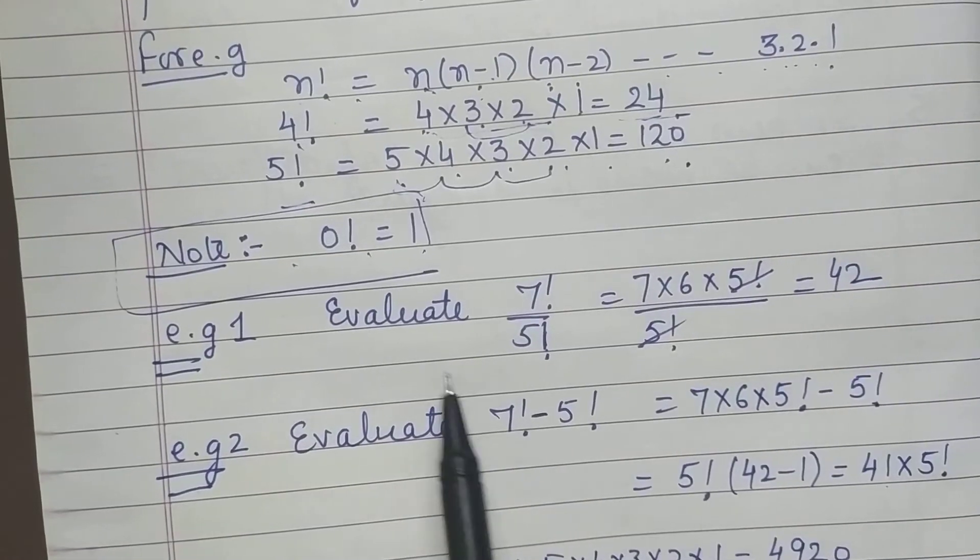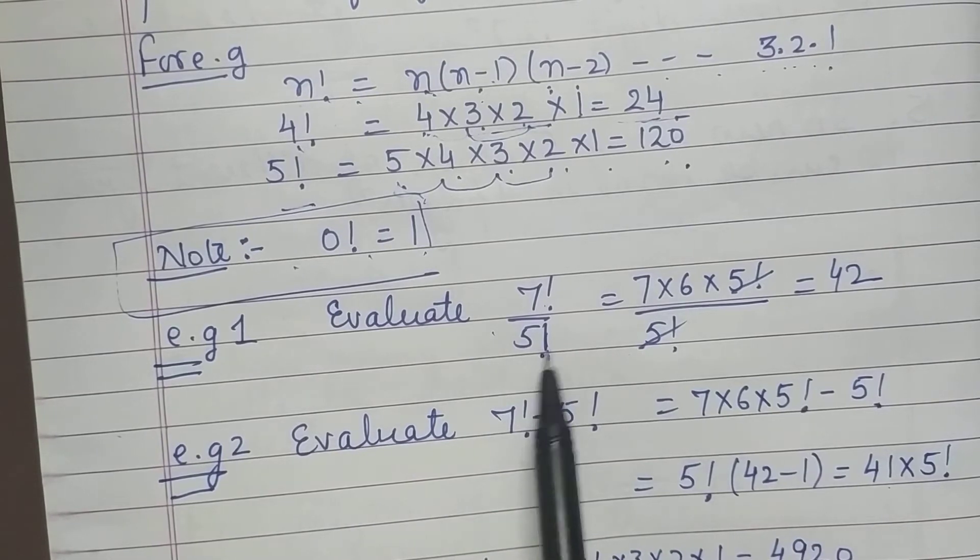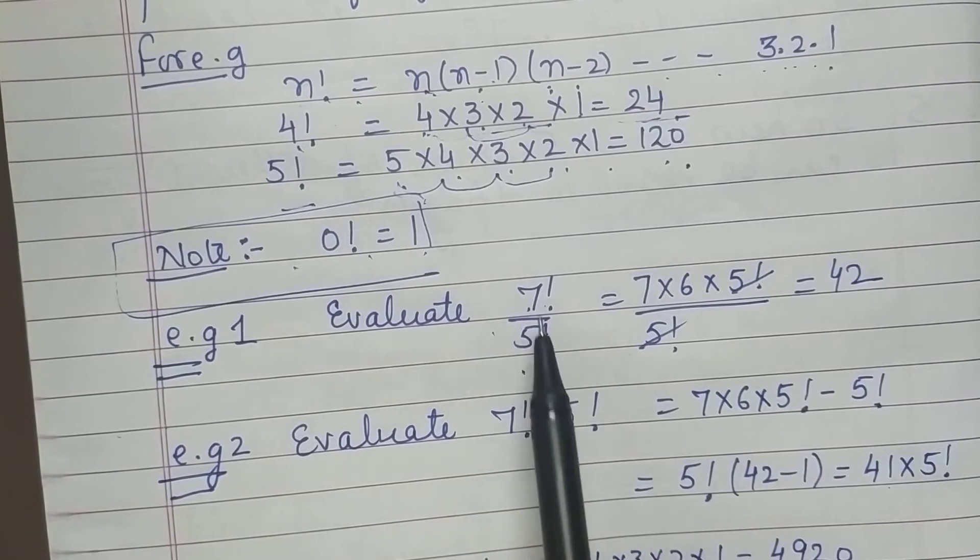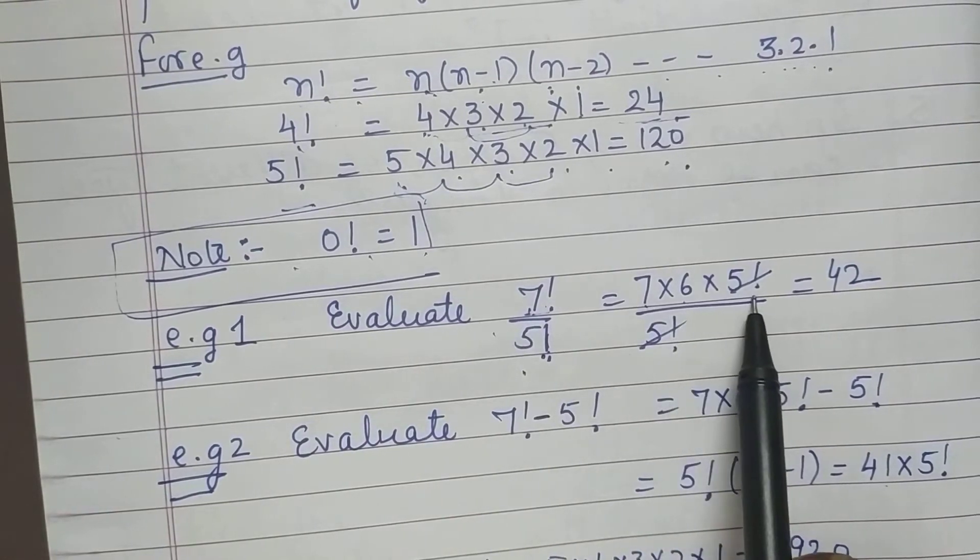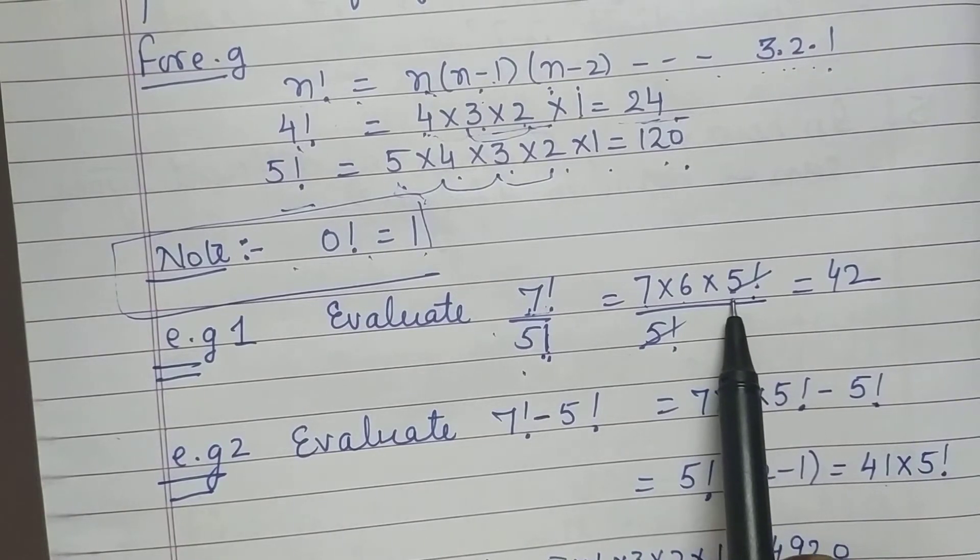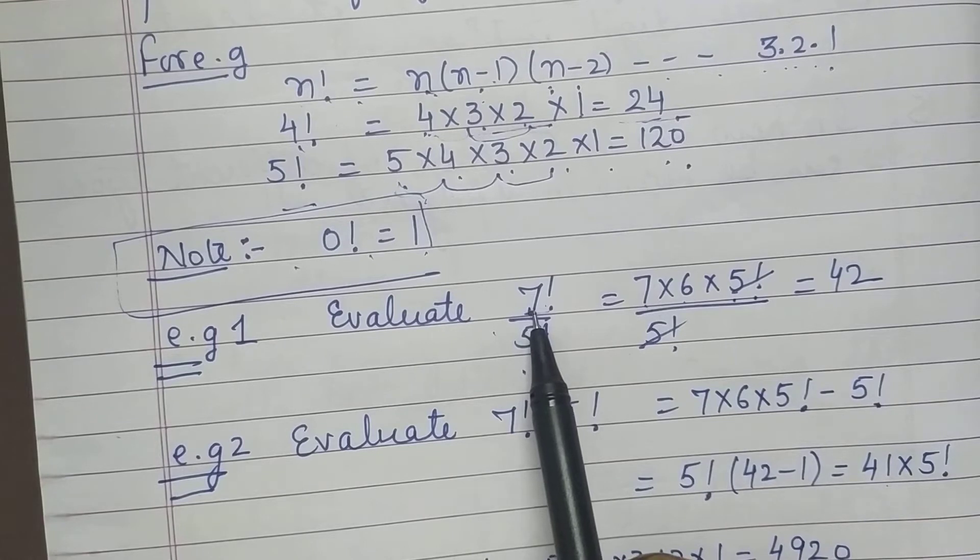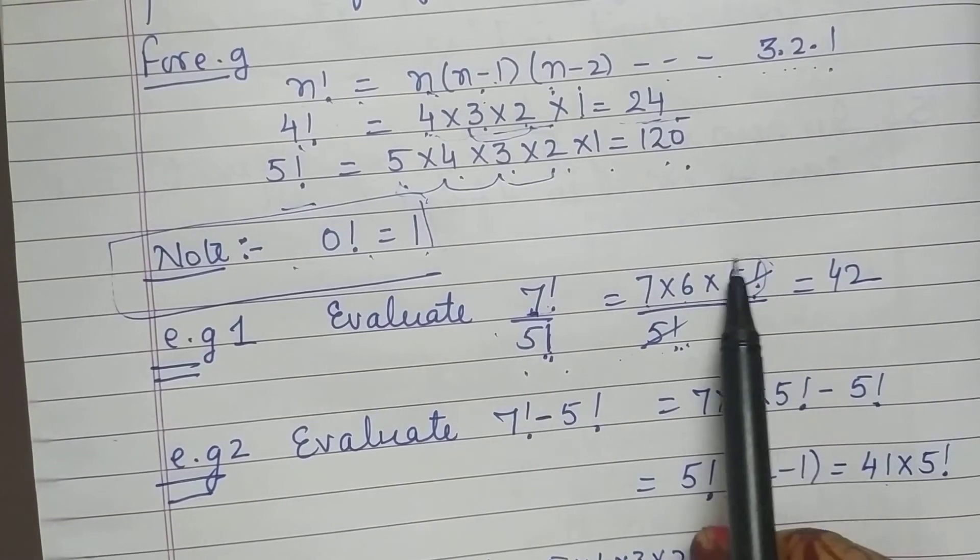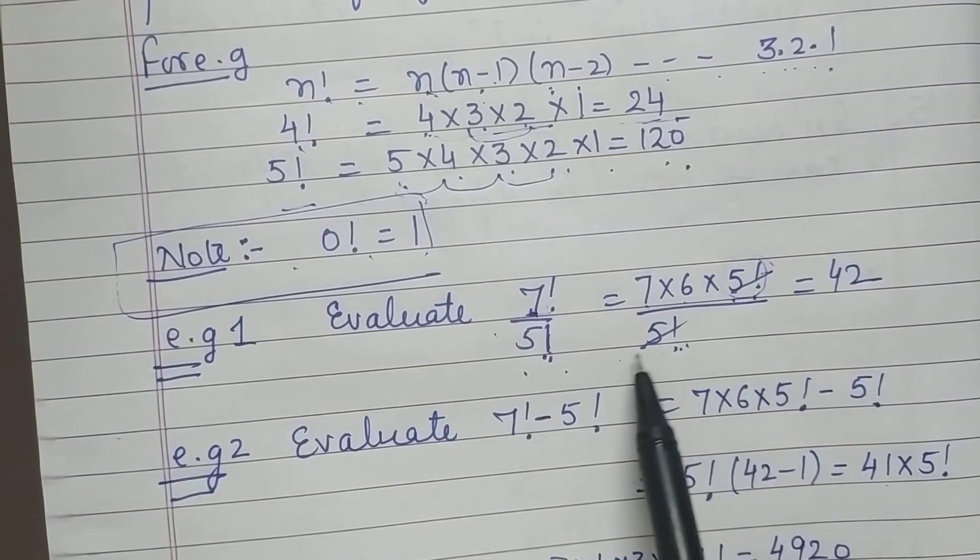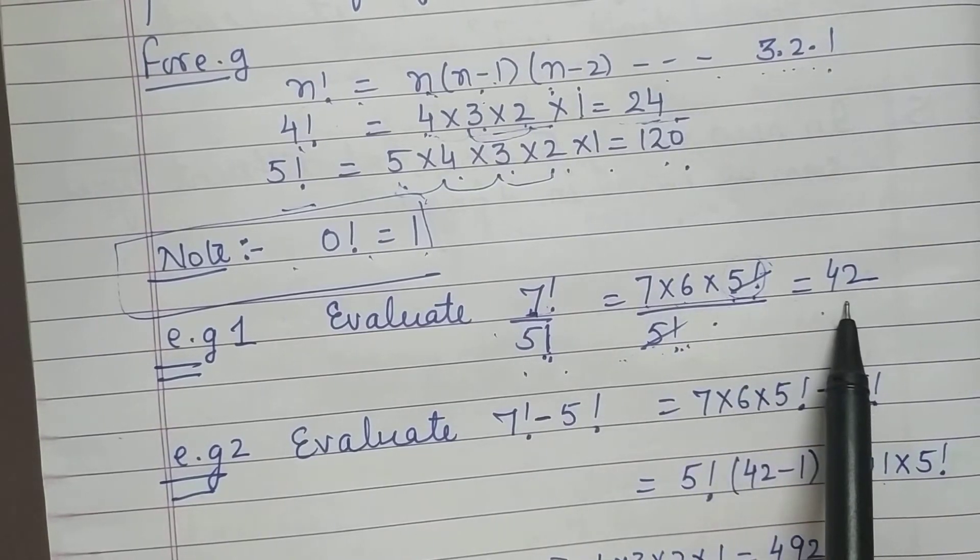For example, let us take evaluate 7 factorial divided by 5 factorial. So 7 is larger, 5 is smaller. So what can I do? I will open this factorial. How to write? 7, 6, 5 factorial. This 5 factorial, how did it come? Larger one is 7, 6, 5, 4, 3, 2, 1. And below also 5, 4, 3, 2, 1. So I wrote that 5, 4, 3, 2, 1 as 5 factorial so that these two get cancelled. So I got 7 into 6, that is 42.